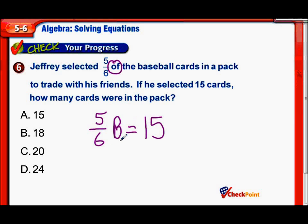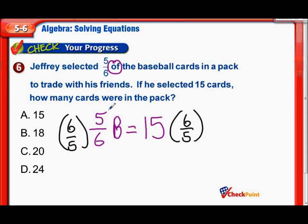So we need to find 5/6 times B equals 15. 5/6 of the baseball cards were 15 cards. So let's figure out how many baseball cards there were. To solve this, we again need to multiply by the multiplicative inverse or reciprocal. So we have 6/5 and 6/5.